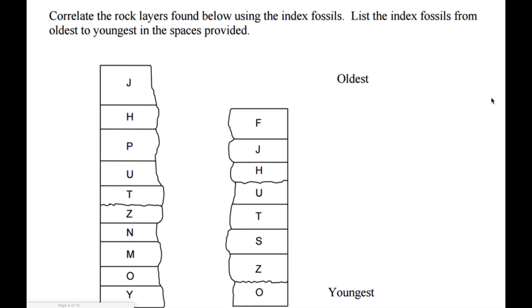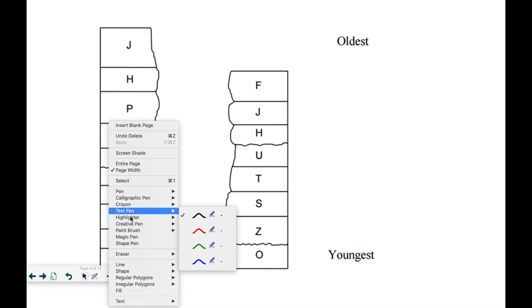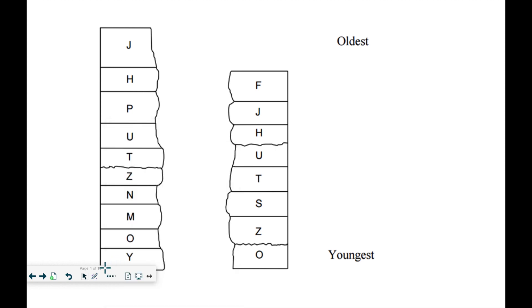Here's another example. In this case, I've got even more layers that I need to do some correlation, and then I'm going to list the layers from oldest to youngest. So again, I'm going to take out my line tool and I'm going to match up some layers from the left strata to the right strata. So layer O is the same on the left and the right. But right away I can see that there's an erosional layer between O and Z that is basically eliminated N and M.